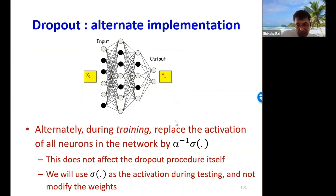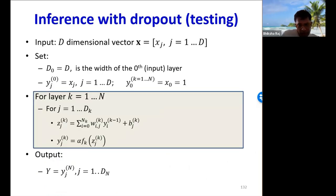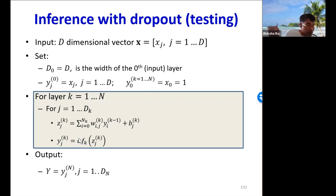Here is the pseudocode for testing with dropout models: it's just the regular forward pass, except the activations are multiplied by alpha. Alternatively, you could use the regular forward pass pseudocode without this alpha, but then during training you would multiply every activation by alpha inverse. Here are some typical results comparing models with and without dropout, published by Nithi Srivastava in 2013. The x-axis shows training iterations and the y-axis shows classification error on test data. Including dropout in training results in a large reduction of error.